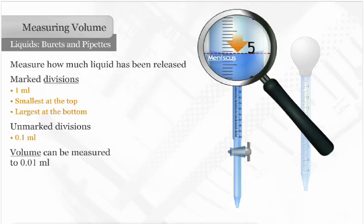In this example, the last graduation above the meniscus is 5 milliliters. There is one unmarked division above the meniscus, and each division represents 1 tenth milliliter. So the certain digits of the reading are 5 and 1 tenth milliliters.